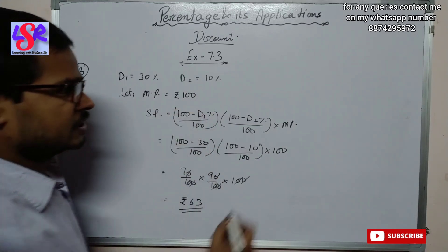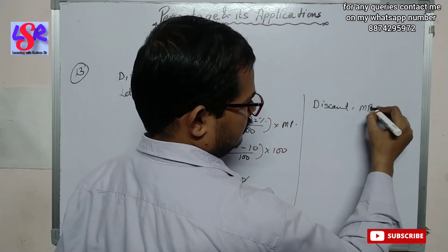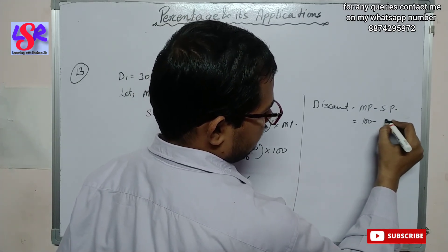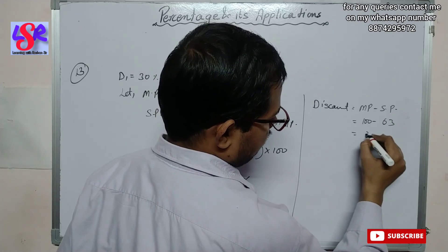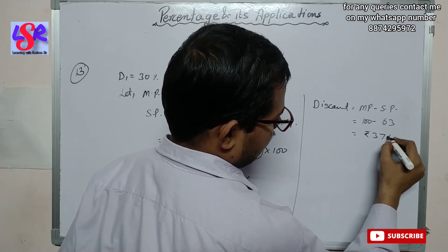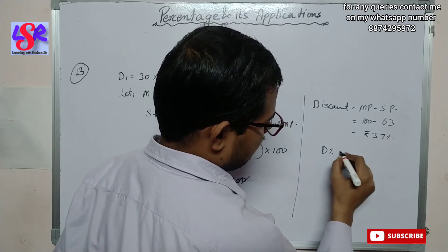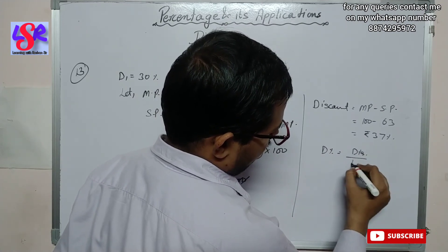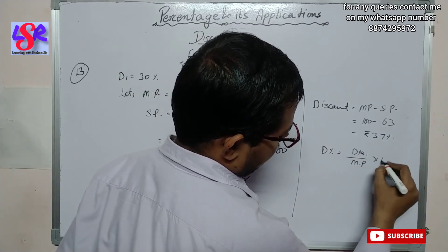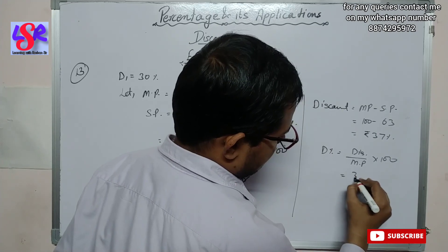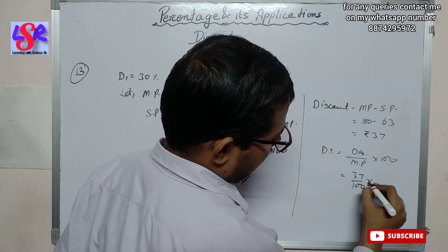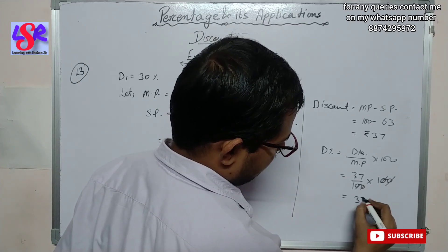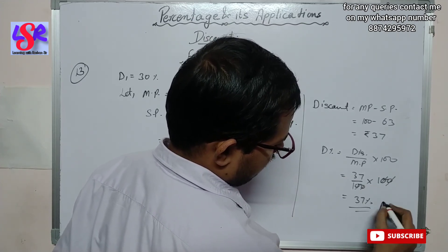Discount = MP − SP = 100 − 63 = rupees 37. Single discount percent = discount / MP × 100 = 37/100 × 100 = 37%. So the single equivalent discount is 37%.